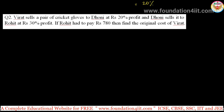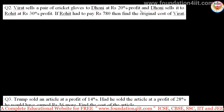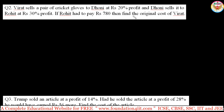That gives 40 by 2, which is 20. So 20 percent is the loss. Just two basic sums, then we go for shortcut training questions. Second question: Virat sells cricket gloves to Doni at 20 percent profit, and Doni sells to Rohit at 30 percent profit. If Rohit paid 780, find the original cost price of Virat. In algebraic method we take x and work one by one, but instead we use a direct method.